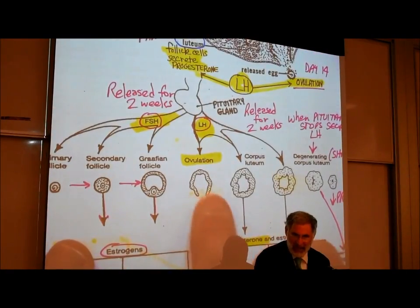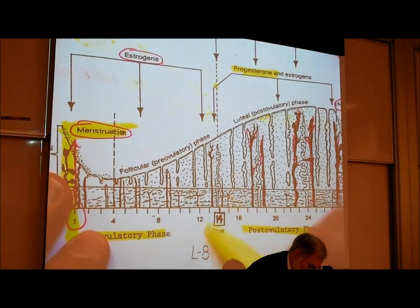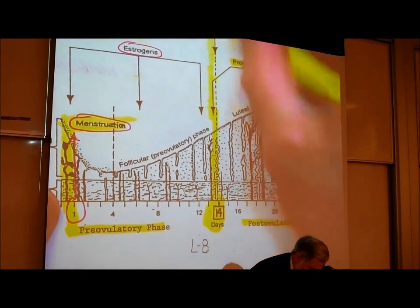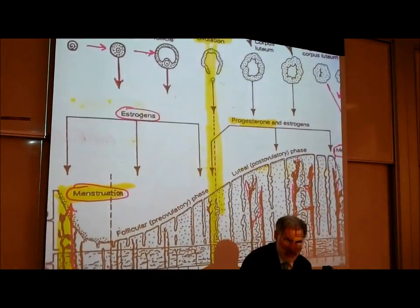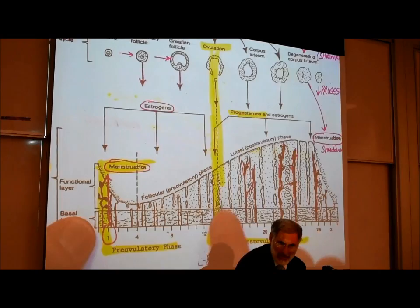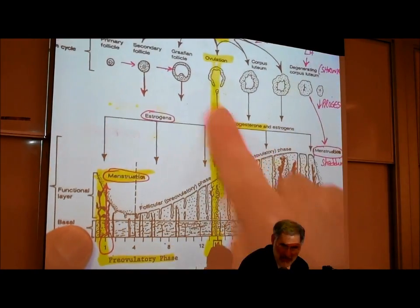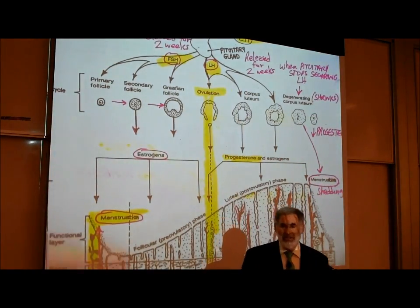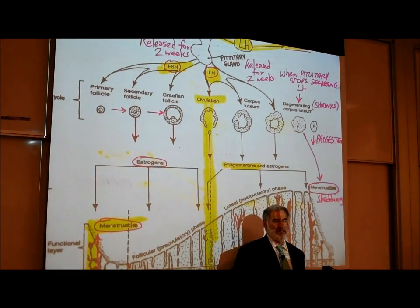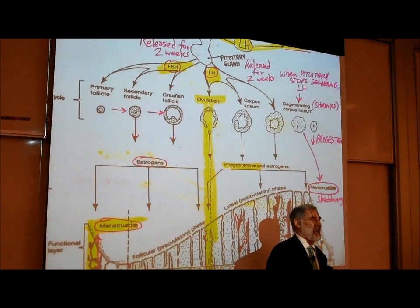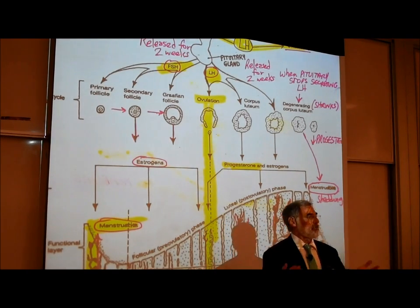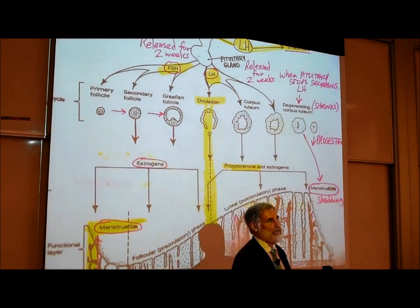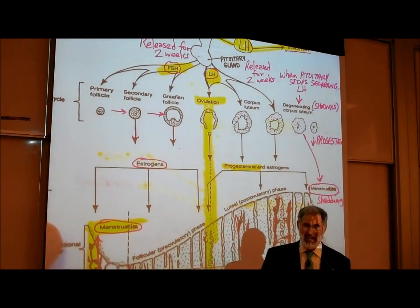Beginning around day 14 — the halfway point in the 28-day cycle — ovulation should occur. Draw a line straight up to day 14 and you see ovulation. What caused ovulation was LH from the pituitary gland. The pituitary stops releasing FSH and switches to releasing LH into the bloodstream. There's a so-called surge in the LH level in the bloodstream, and that rise in LH is what causes the egg to pop out of the ovary — that's ovulation.